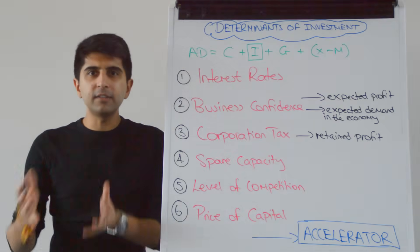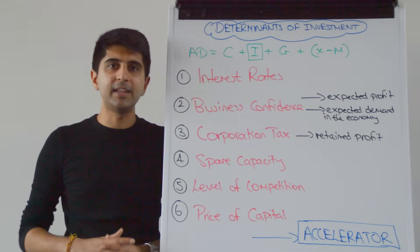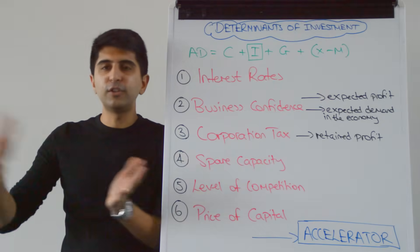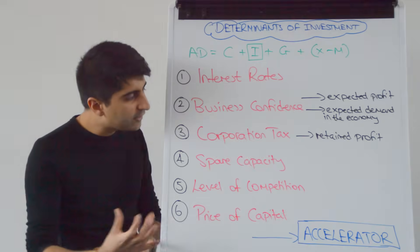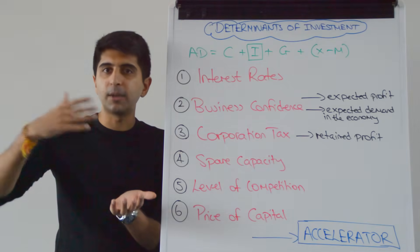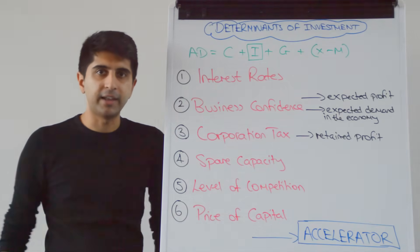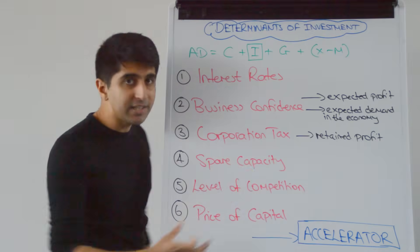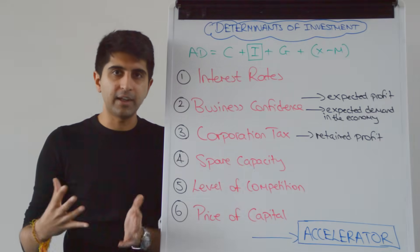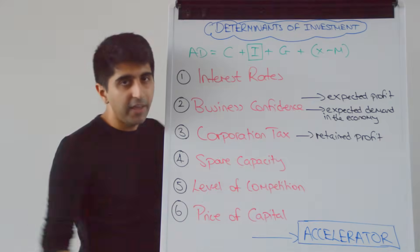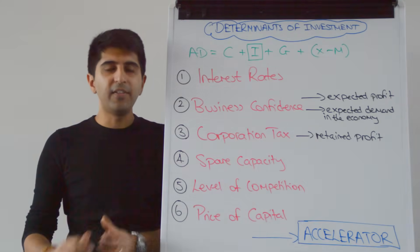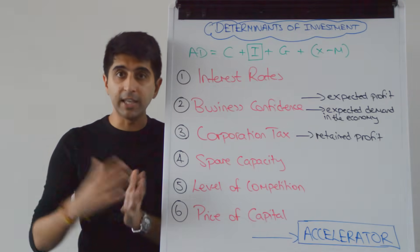Spare capacity is another factor. If businesses have a lot of spare capacity, there is no need to invest — no need to buy more capital machinery or build a new factory — because that spare capacity can be used to increase supply and production instead. So the greater the level of spare capacity, the lower the marginal propensity to invest. Whereas if businesses are operating very close to full capacity, there is a strong incentive to invest to increase capacity.